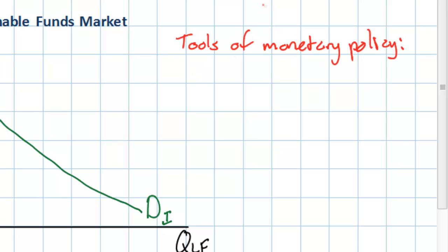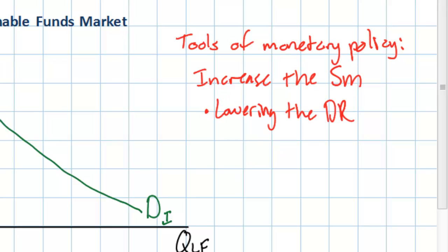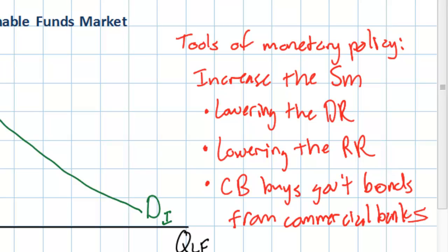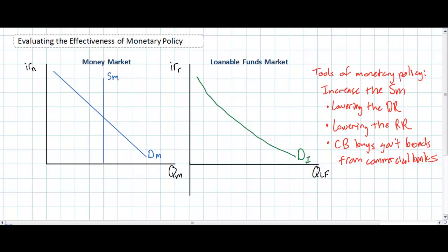During a recession, when aggregate demand is weak, a central bank wants to increase the money supply. There are three essential ways a central bank can do this: lowering the discount rate, lowering the reserve requirement, and — the third and most commonly used tool — when the central bank buys government bonds from the commercial banking system. If we look at the simple diagram of the money market and the loanable funds market, we can illustrate the effect of any of these three tools given a normal downward sloping investment demand curve.